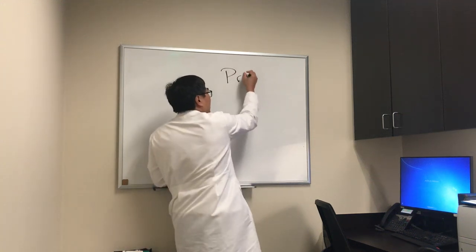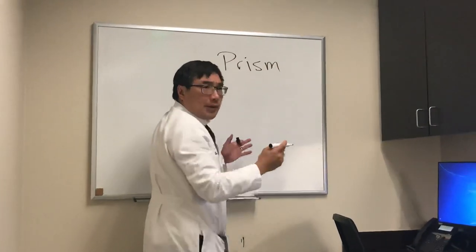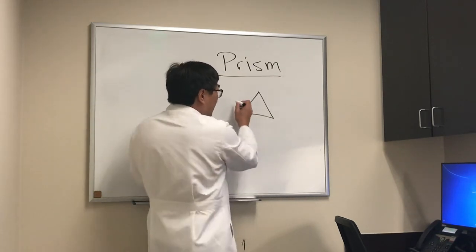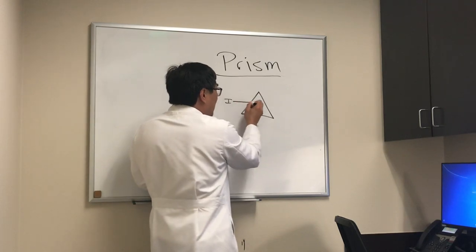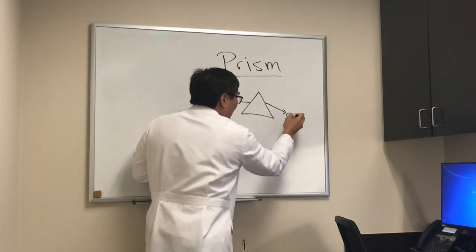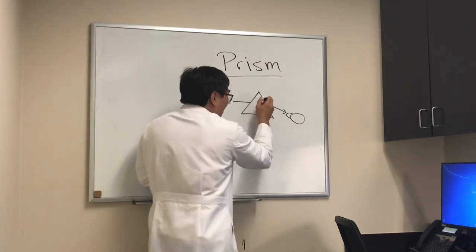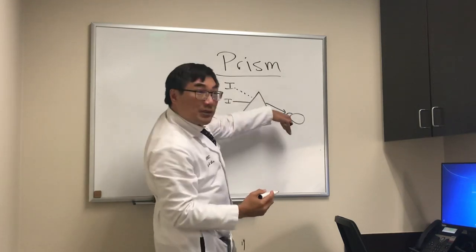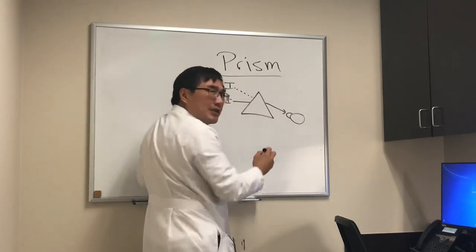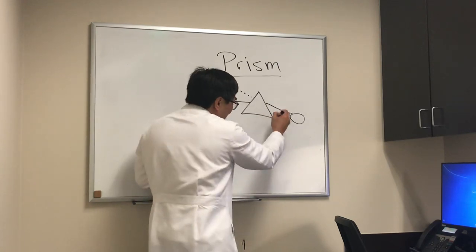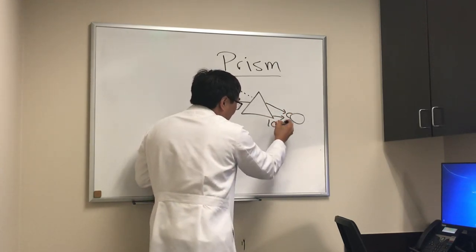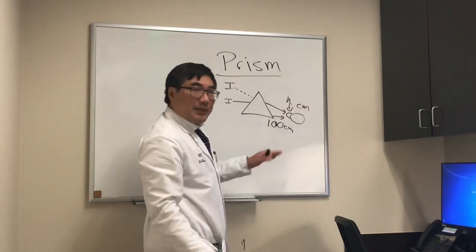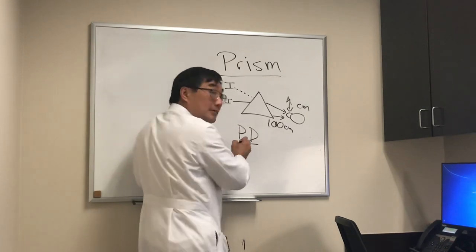We're going to be talking about prisms and how we use them in neuro-ophthalmology. A prism is an optical device, but it's different than a lens. A prism bends the image, so if your eyeball is here, it will see the image as displaced. The amount of power of the prism to displace an image at 100 centimeters, measured in centimeters, is the power of that prism — and we record this power as prism diopters.